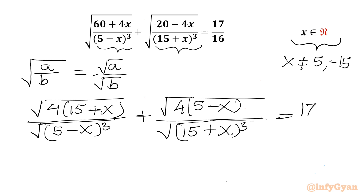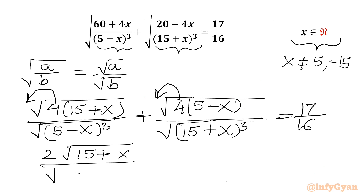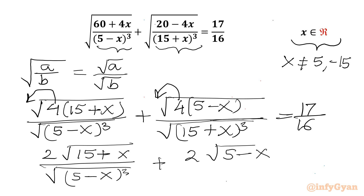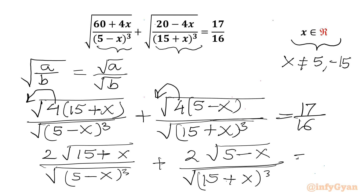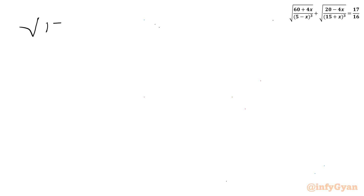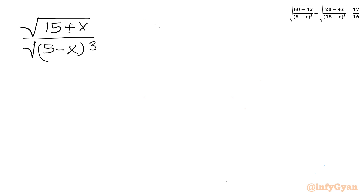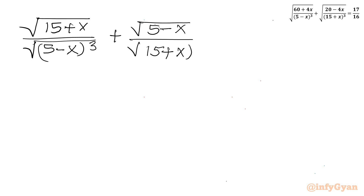Right hand side is 17 over 16. Now this 4 will come out as 2. So I will be writing 2 times square root (15 plus x) over square root (5 minus x) whole cube, plus square root (5 minus x) divided by square root (15 plus x) whole cube. Right hand side is 17 over 16. Now I can divide both sides by 2, so right hand side will be 17 over 32.